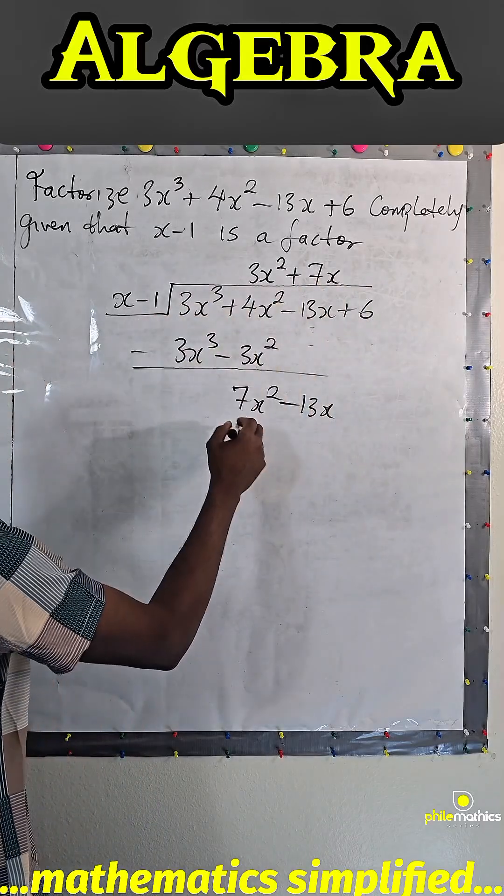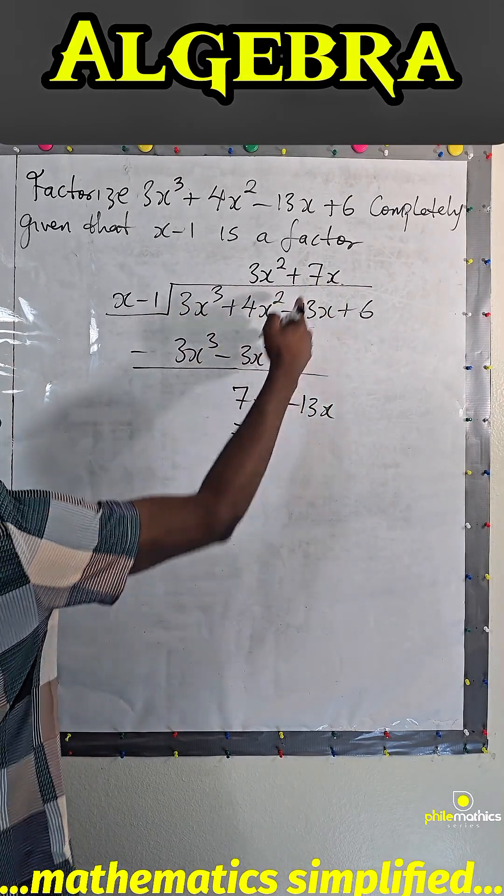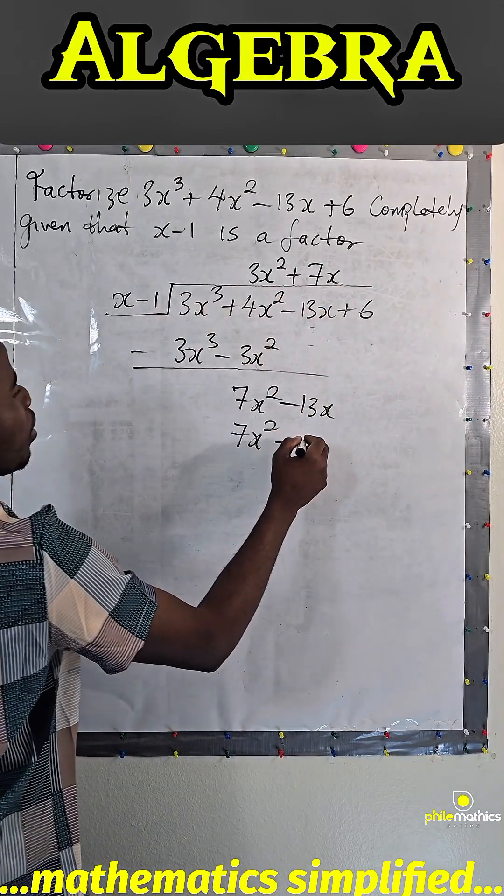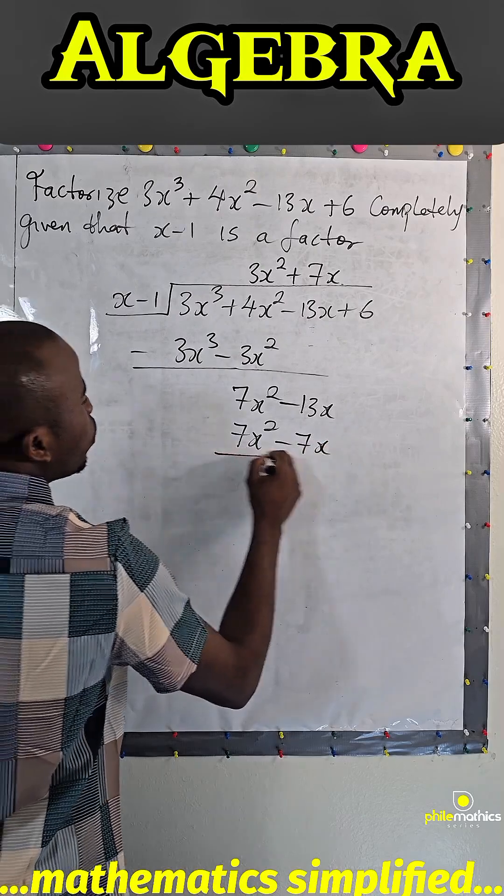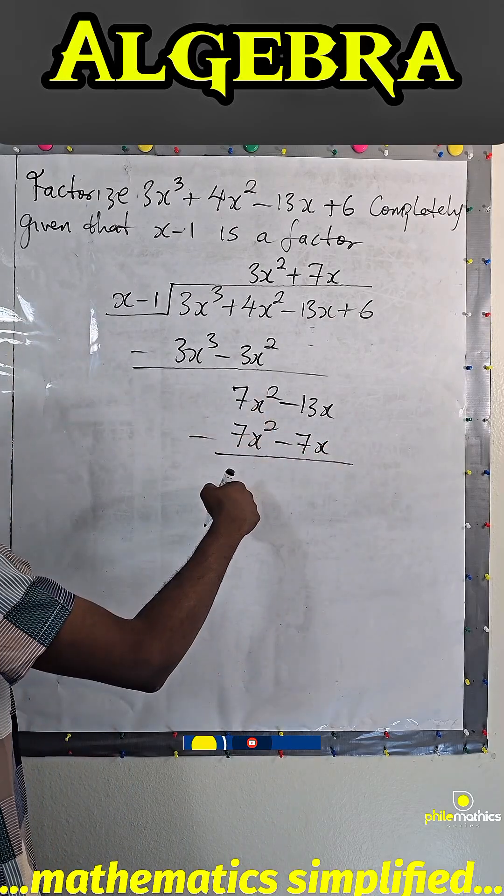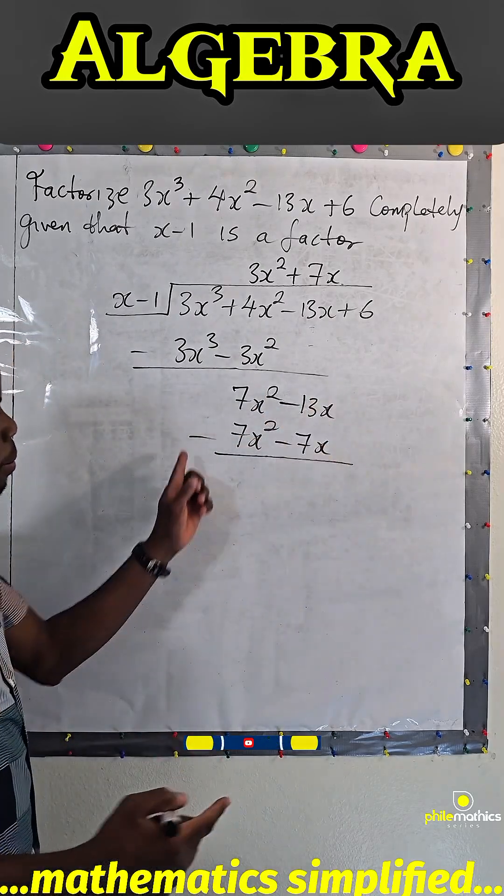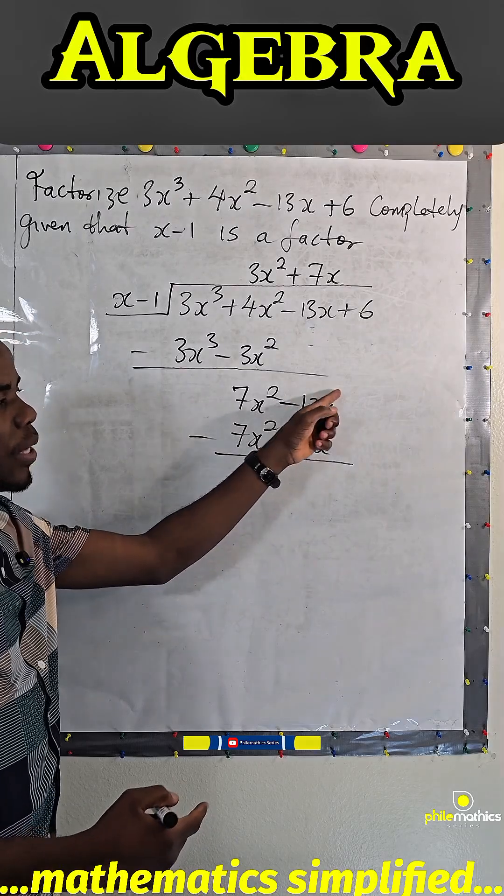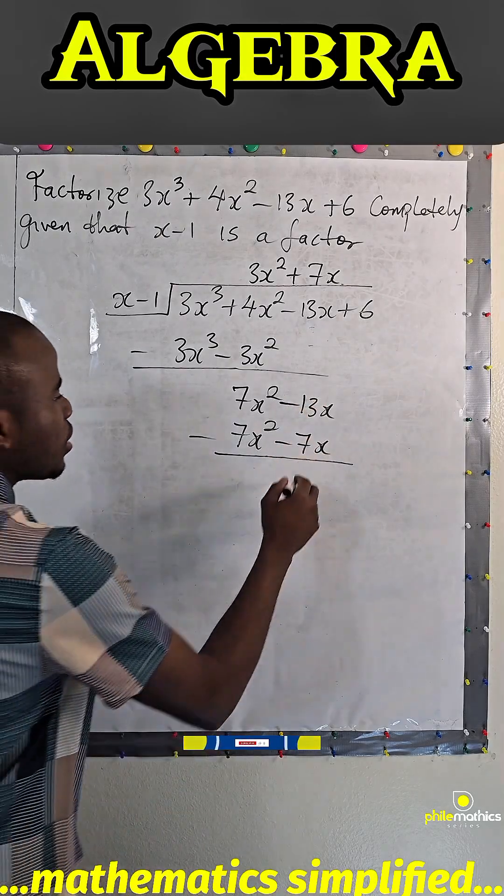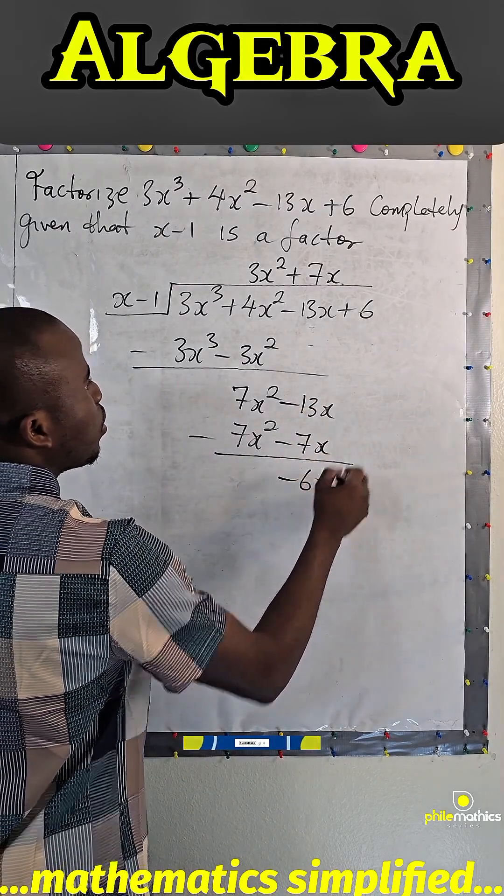7x times x, 7x². 7x times minus 1, minus 7x. We subtract again, this is 0. Minus 13x minus minus is plus. Minus 13x plus 7x is minus 6x.